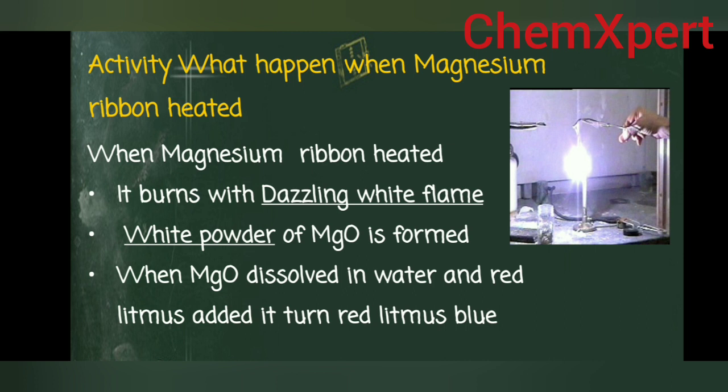From the activity questions: Why do we rub the magnesium ribbon with sandpaper? So that the oxide layer formed on it is removed. What type of flame is obtained? A dazzling white flame is obtained. What substance is formed after the reaction? White powder of MgO is formed. What is the nature of MgO? It is basic in nature.